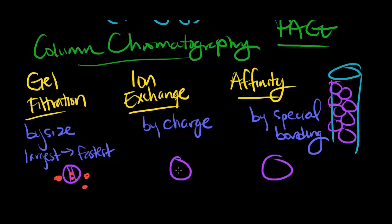Now ion exchange uses beads of either negative or positive charge. Let's use beads with a positive charge for an example. Proteins that are negatively charged will be attracted to the beads that are positively charged, while the proteins that are also positively charged will run straight through. Affinity beads utilize special bonding, such as antibodies designed for a specific protein. The other proteins will run straight through.